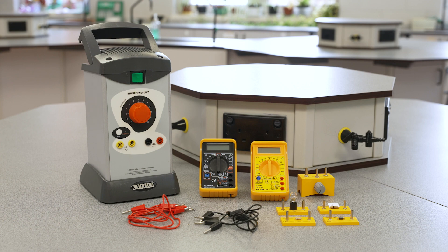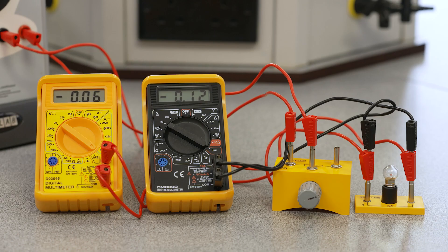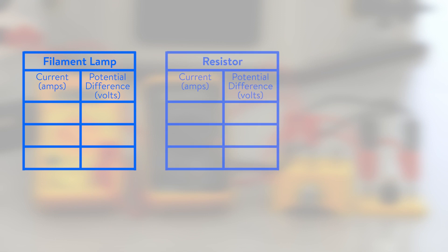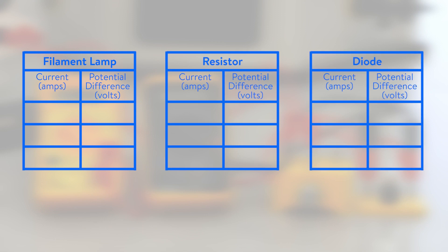We're going to be using components from our GCSE BEK kit. Students will need to draw a suitable table showing potential difference in volts and current in amps for each of the circuit components they're going to investigate.